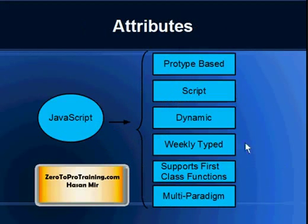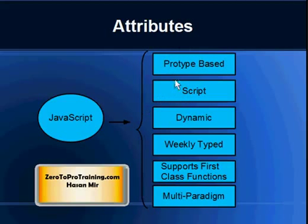Now we are going to talk about high-level attributes of the JavaScript language. If you don't understand any of these, that's totally fine. This is just to give you a high-level overview before we dive deep into the waters. First of all, JavaScript is a prototype-based programming language. It is a style of object-oriented programming in which classes are not present. Inheritance is performed via the process of cloning existing objects.